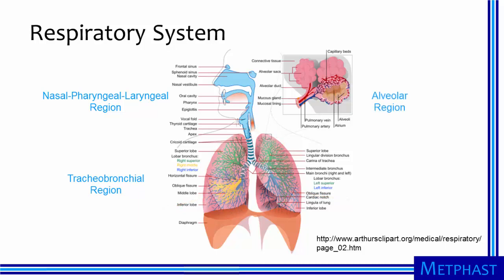Finally, the air sacs at the very end of the branches of the tracheobronchial region, shown in the inset, are the alveoli, or the alveolar region of the lung. This is the part of the lung where gas exchange occurs — oxygen for carbon dioxide. Because these regions of the lung have different dimensions, different processes govern the movement of particles in these regions, and different sizes of particles may reach and deposit in the three regions, causing different health effects.